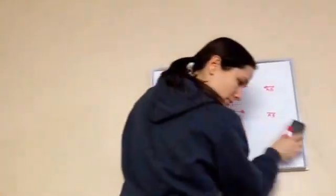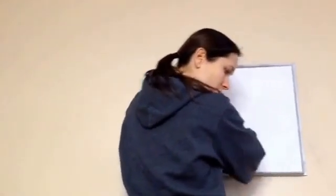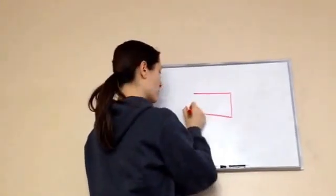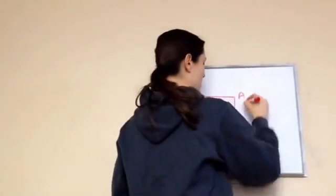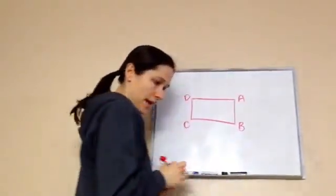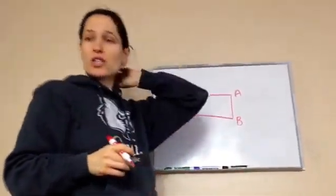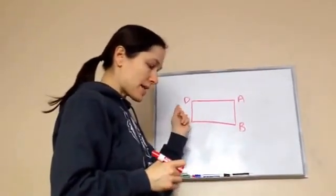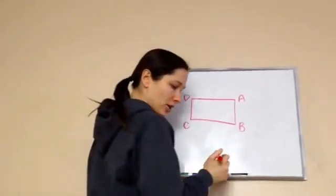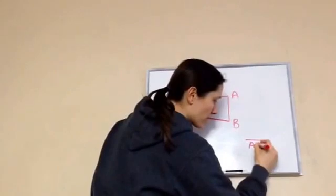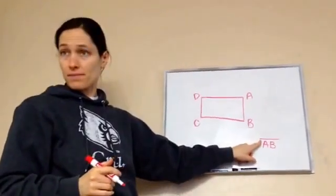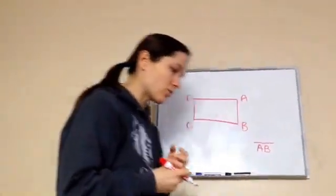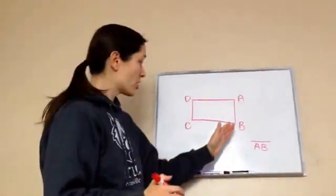Draw this rectangle on your paper, please. Then we're going to label it A, B, C, and D. Now here's the question: in rectangle ABCD, name the segments that are perpendicular to A-B. Is that a line, a segment, or a ray? A segment. So it's asking you to name the segments that are perpendicular to A-B.